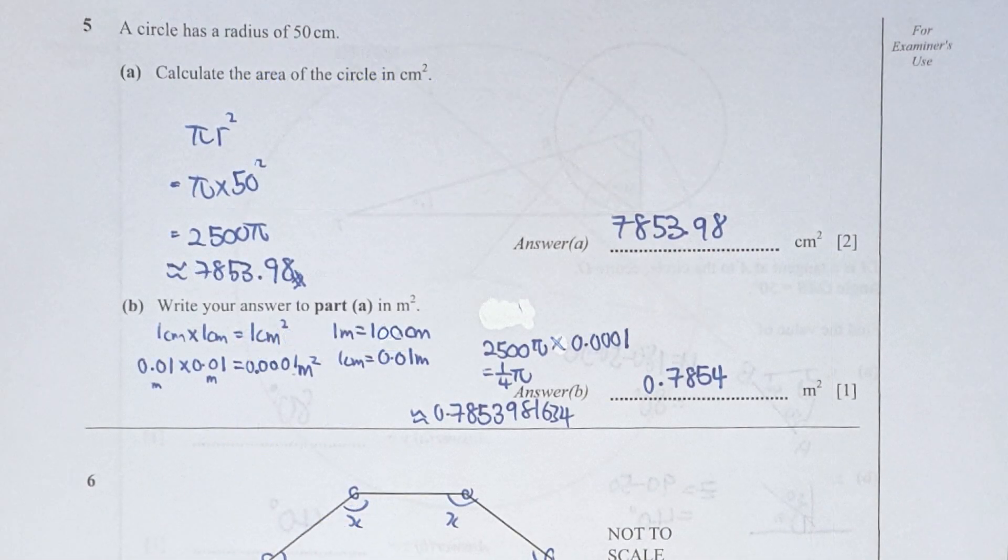Question 5 here, area of the circle. We will be using pi r squared, so pi times 50 square is actually 2500 pi, which is 7853.98 centimeter square. So translate your answer into meter square. So 1 cm times 1 cm equals to 1 cm square.